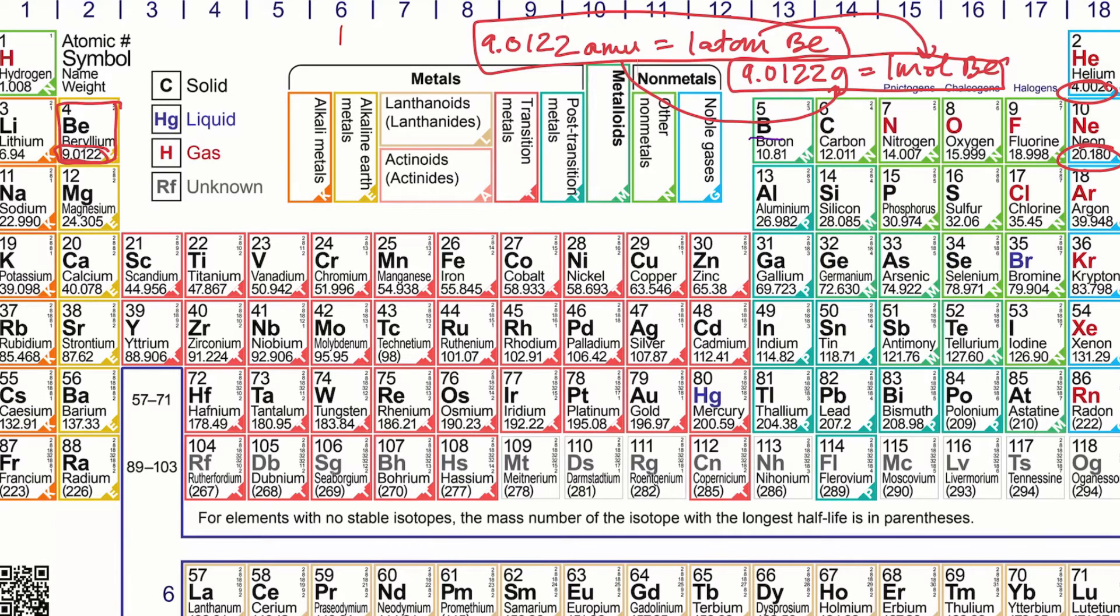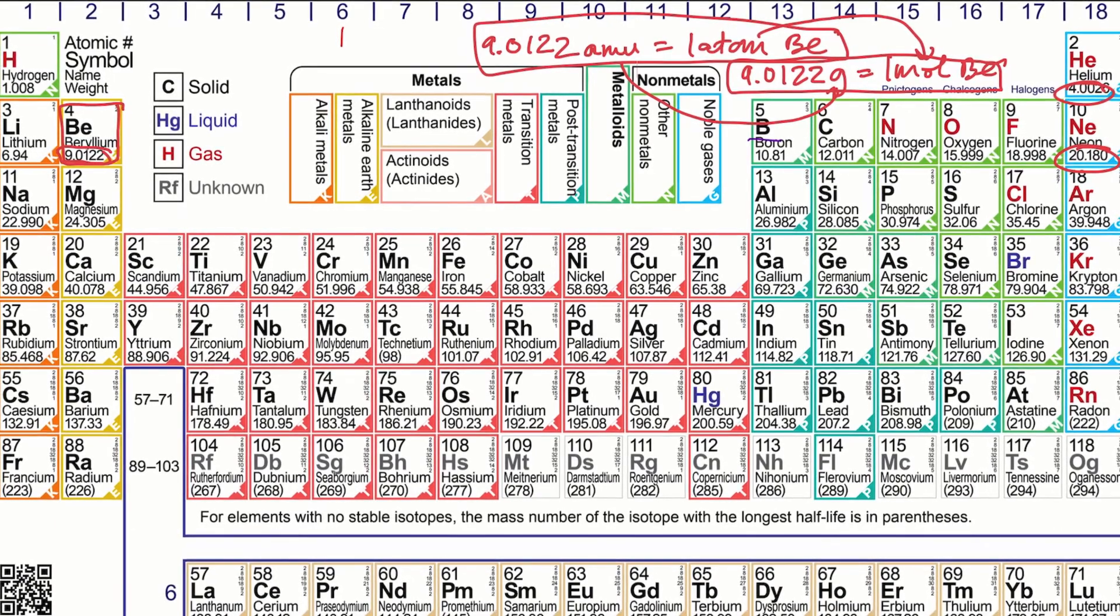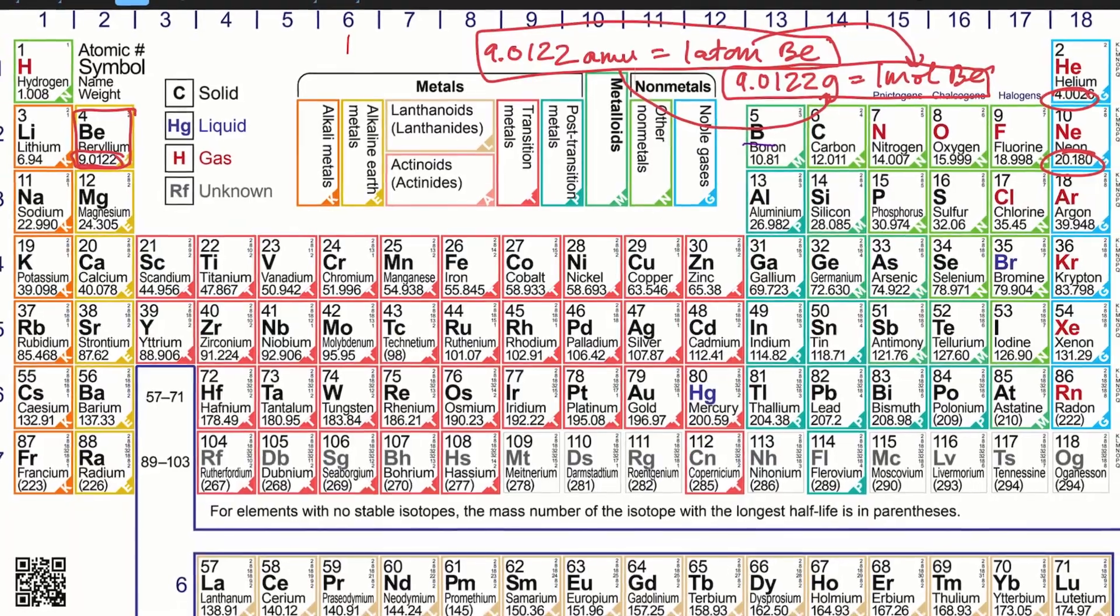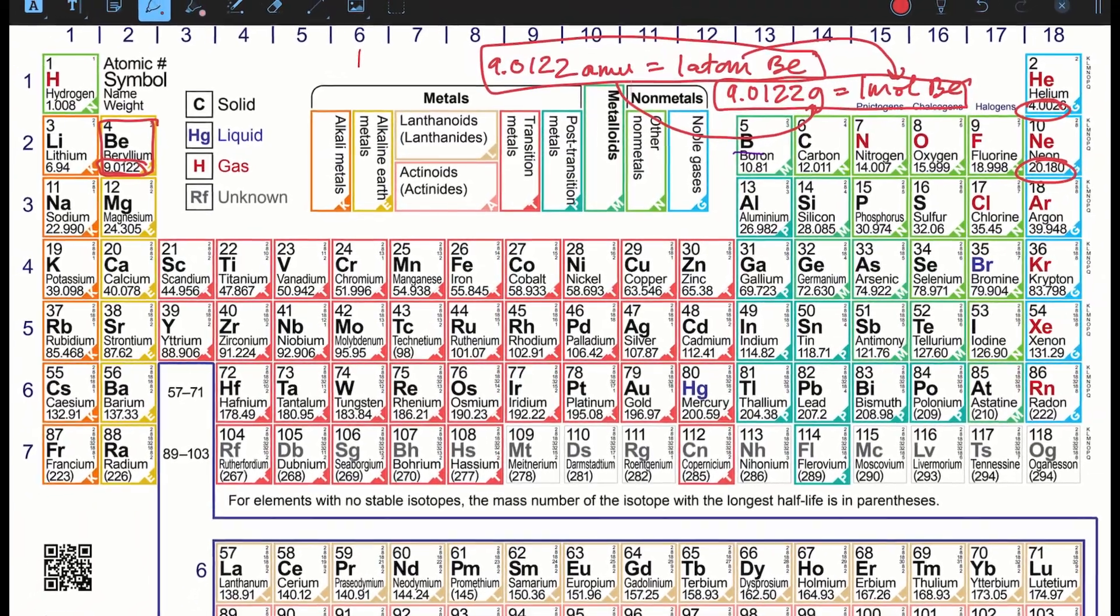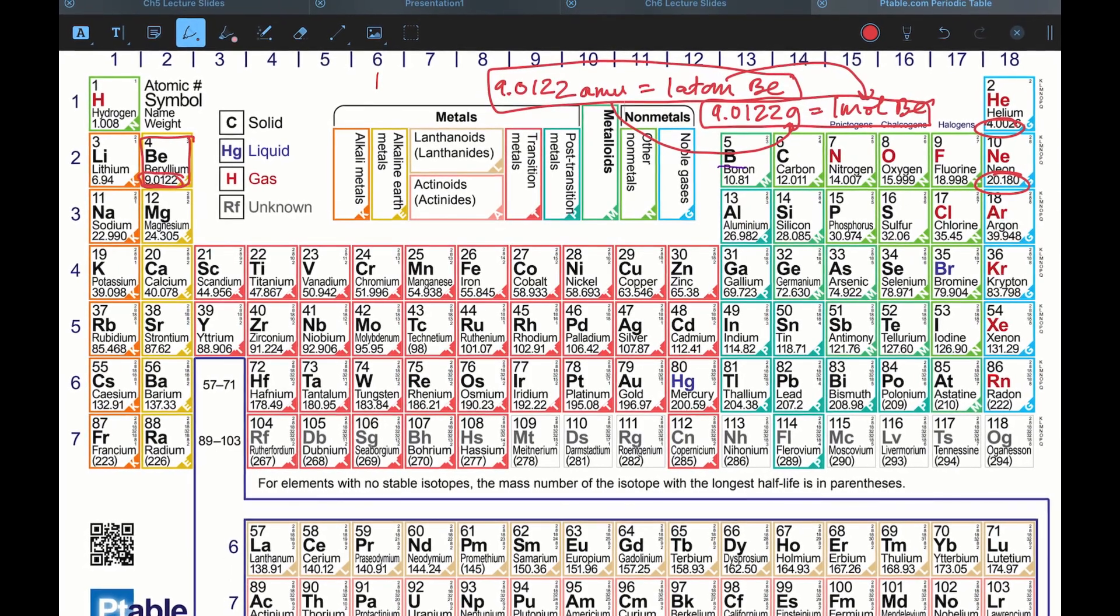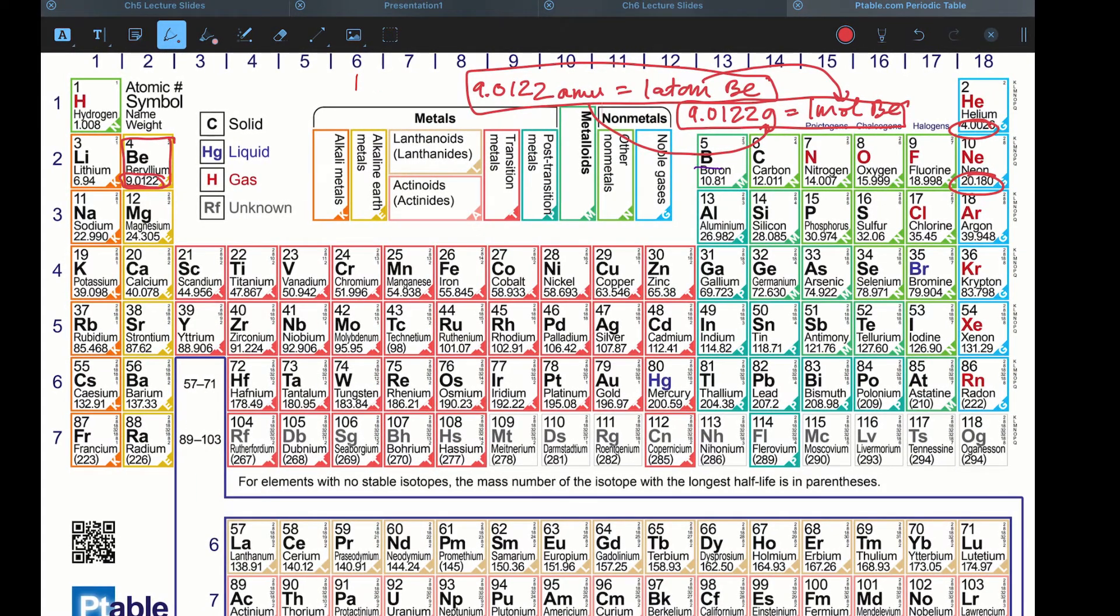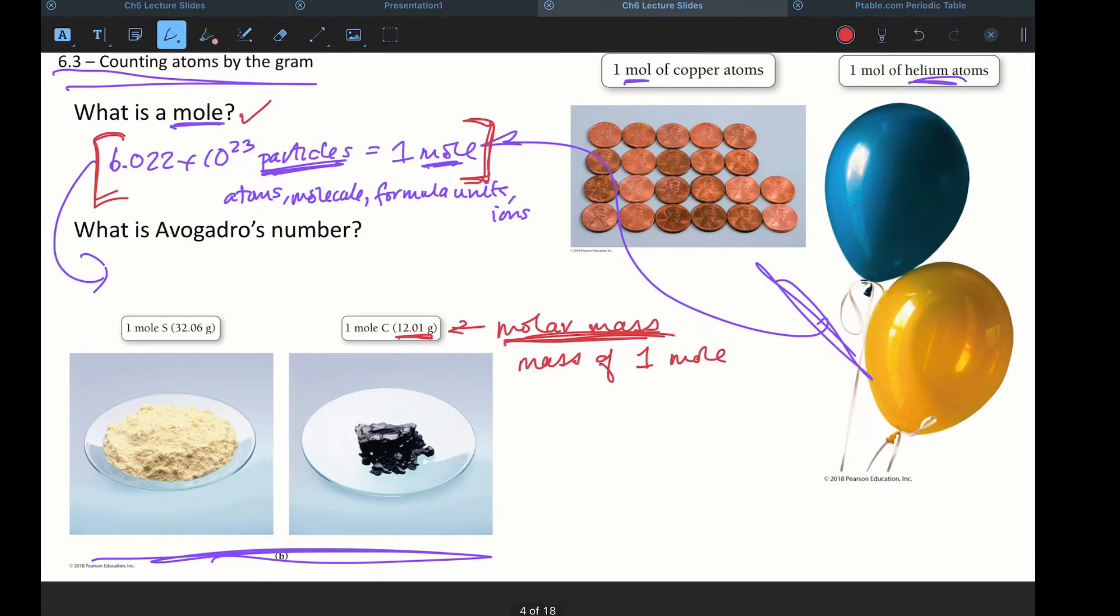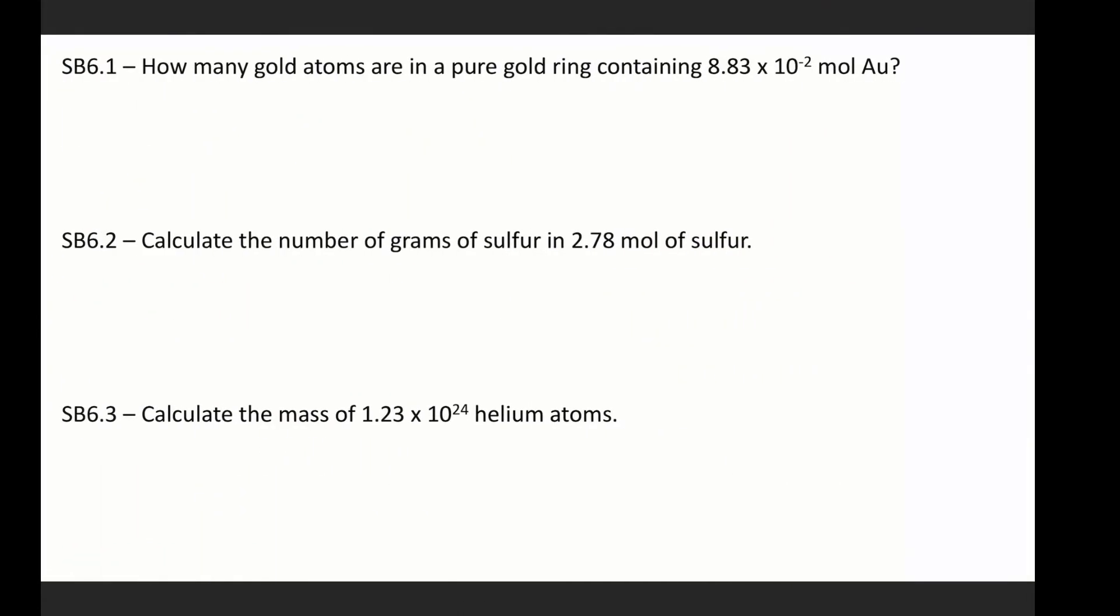So a mole of neon atoms has a mass of 20.18 grams. A singular neon atom has a mass of 20.18 AMU. Does that make sense? All right. So then if we go back to our slides here, that's where this information comes from. It's from our periodic tables. So let's go ahead and do our skill builders really quickly.